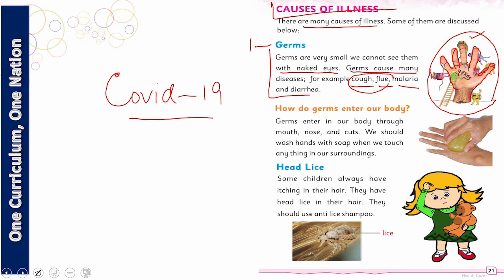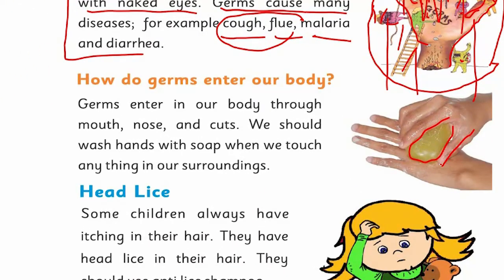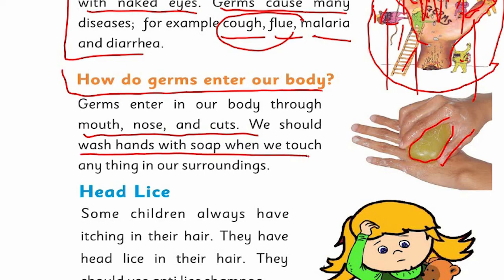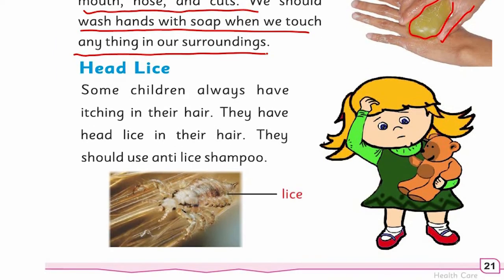Remember, when we wash our hands with soap, all these germs fall away and are killed. So we should regularly wash our hands with soap. How do germs enter our body? Germs enter our body through the mouth, nose, and cuts. We should wash our hands with soap whenever we touch anything in our surroundings.